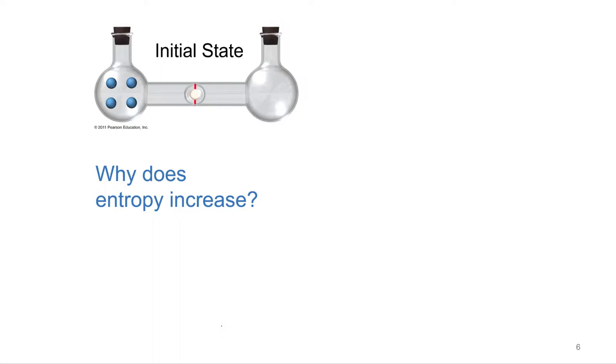I've got a couple of examples or analogies that will help us understand this. The first one is, let's look at this system where we've got four gas molecules on the left side and then no gas molecules on the right side. And then there's a valve in the middle. This is my initial state.